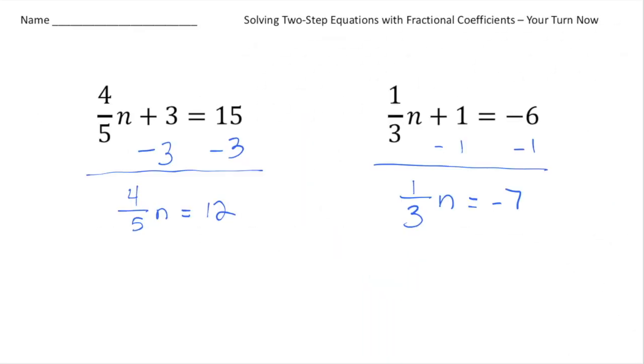All right. Welcome back. Let's see how you did with these practice problems. So to give us a little jump start, I've already done the first part of each problem. So for the first one, I subtracted 3 from both sides. And now I have 4 fifths n equals 12. And this one over here, I subtracted 1 from both sides. So now we have 1 third n equals negative 7.